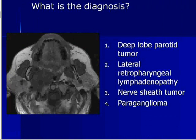Is it a deep-lobe parotid tumor? Is it a lateral retropharyngeal lymph node? Is it a nerve sheath tumor or paraganglioma? You have 10 seconds to vote. Is it one, deep-lobe parotid tumor? Two, lateral retropharyngeal lymphadenopathy? Three, nerve sheath tumor or paraganglioma?